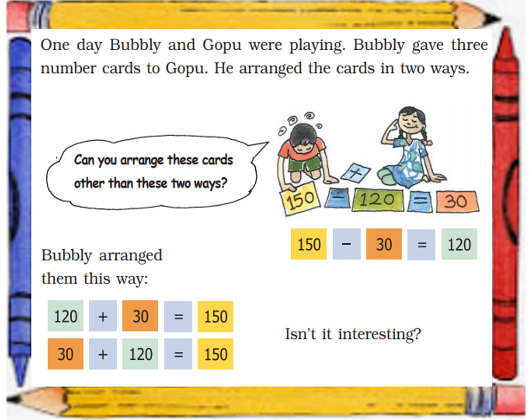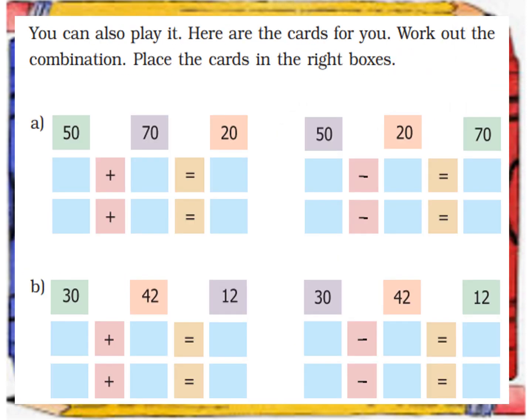You can also play it. Here are the cards for you. Work out the combination. Place the cards in the right boxes. So in the first question we have 50, 70, and 20. To make a 70, we will have to put the smaller cards together to make the larger card. So first we will keep 50 plus 20 which will be equal to 70, or we can arrange it as 20 plus 50 is equal to 70. When we have to use a minus sign, if we keep the largest card first and then subtract the other card, we will get the remaining card. So 70 minus 50 is equal to 20, or 70 minus 20 is equal to 50.